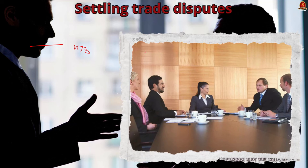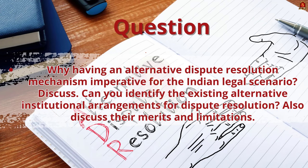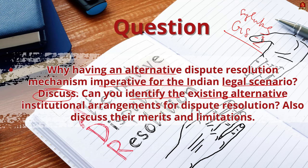In our discussion, we are going to see about alternative dispute redressal mechanisms through a main answer writing approach. This topic comes under GS Paper 2. The question is: Why is having an alternative dispute resolution mechanism imperative for the Indian legal scenario? Discuss. Can you identify the existing alternative institutional arrangements for dispute resolution in India, and also discuss their merits and limitations? This question asks us to state the importance of having an ADR mechanism in the Indian legal scenario, enlist the existing ones, and their advantages and disadvantages.